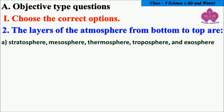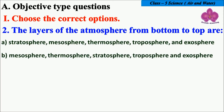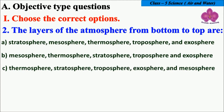Next, the layers of the atmosphere from bottom to top are. Look at the options. Option A: Stratosphere, Mesosphere, Thermosphere, Troposphere, and Exosphere. Option B: Mesosphere, Thermosphere, Stratosphere, Troposphere, and Exosphere.